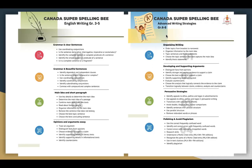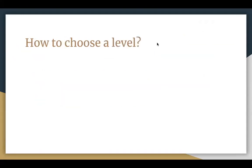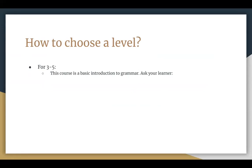Those are the general outlines of what we might look at in these different classes. Now, very quickly — how do we choose a level? We're looking at two levels: grades three to five and grades six to eight. The three to five level is a basic introduction to grammar. You could ask your learner a few questions — or consider whether your learner qualifies. Are you comfortable with comma rules? Is punctuation something you're comfortable with? If not, the three to five level is good for you because it will establish the basic punctuation rules.